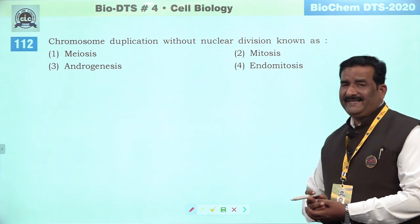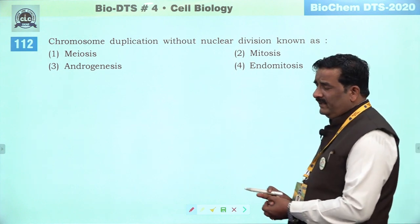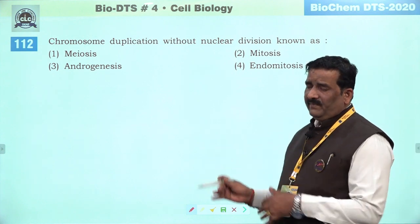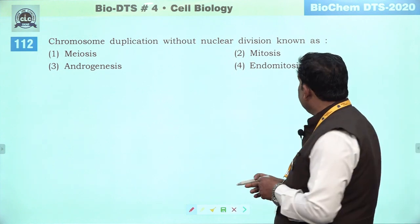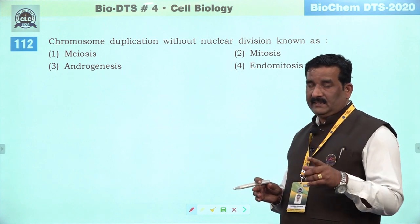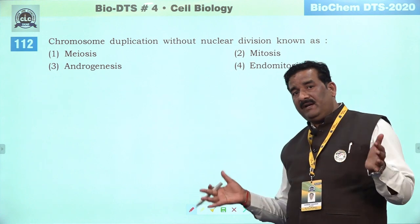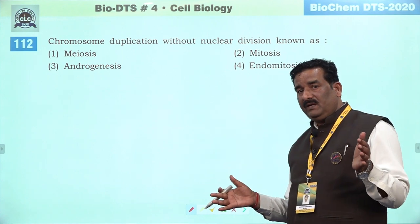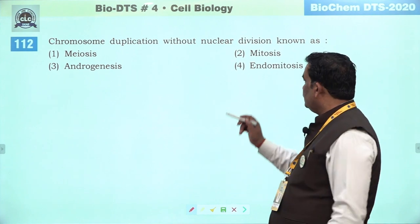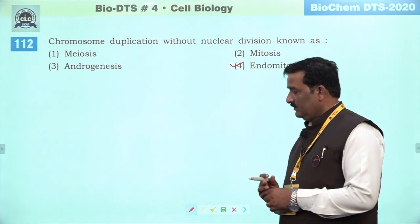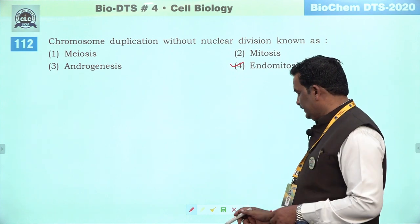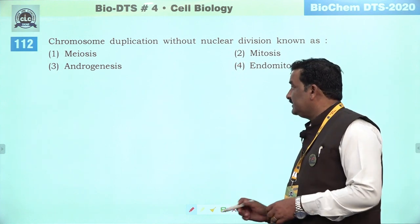Next question: chromosome duplicate without nuclear membrane. Information based question hai — ise hum kya kehte hain — endomitosis — jahan par nuclear membrane bhi divide nahi hoti hai, bas chromosome divide ho jaate hain. Fourth is the right answer.